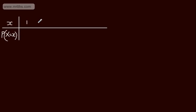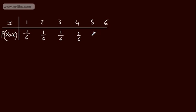So the score obtained can be 1, 2, 3, 4, 5, and 6. If we consider the probabilities, we've got 1 over 6 for each outcome. So in this case n is 6, and the probability that each of these particular values of x occurs is 1 over 6.